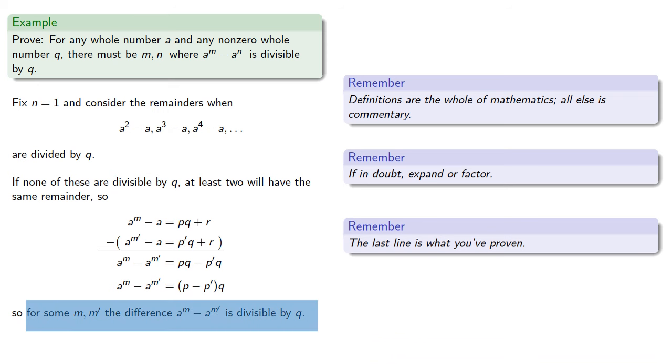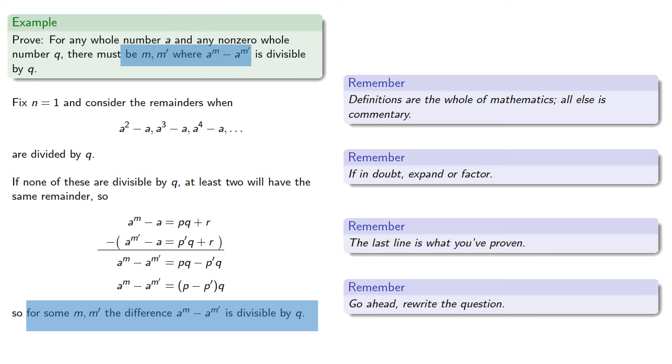It's useful to remember the last line is what you've actually proven, and it's not quite what we want to prove. But go ahead and rewrite the question. We'll change from a^m minus a^n to a^m minus a^m'.